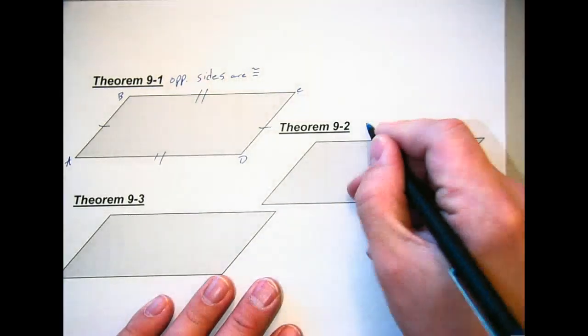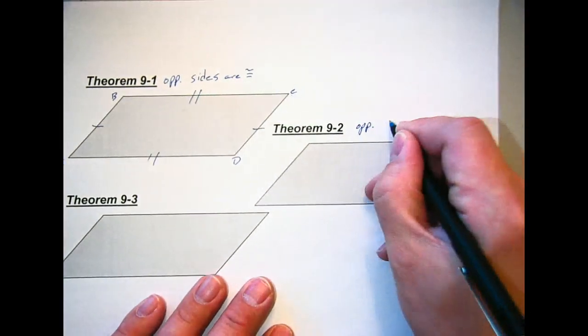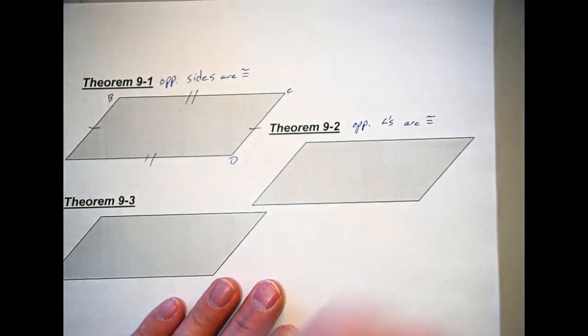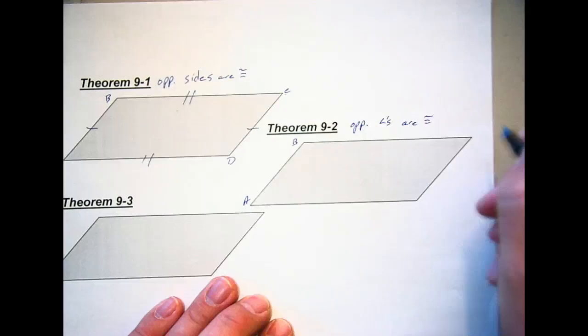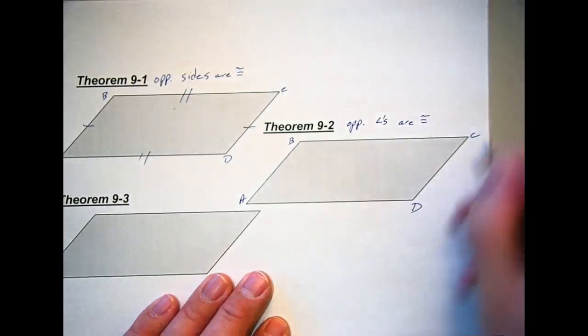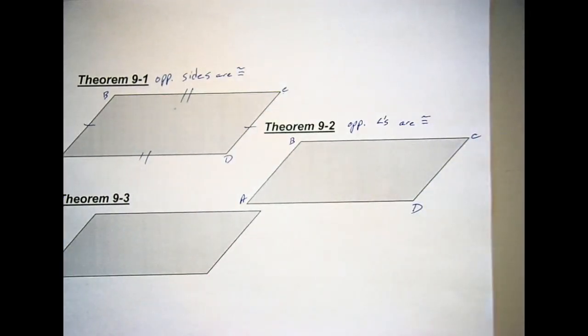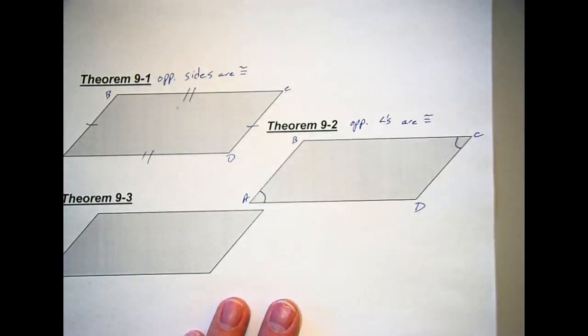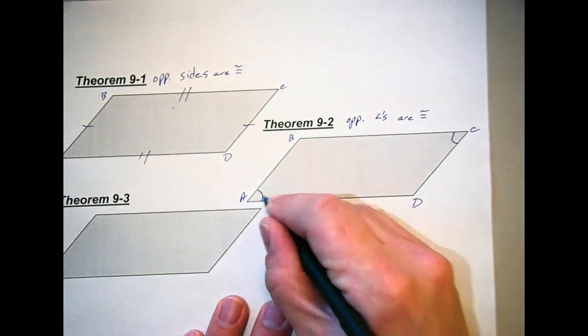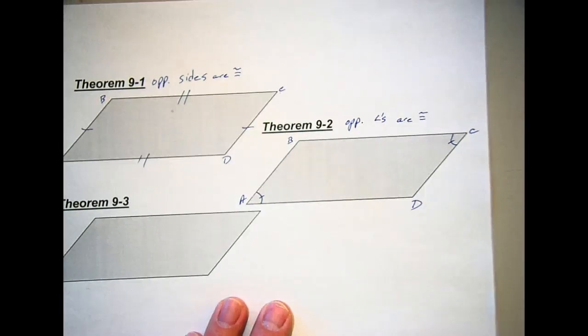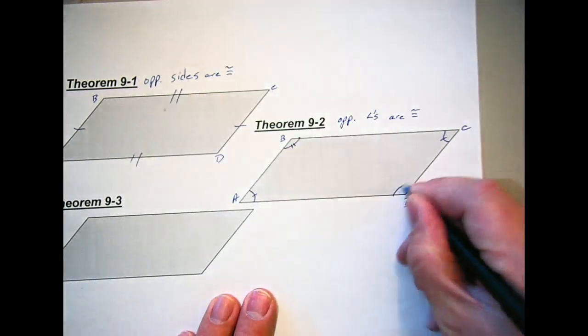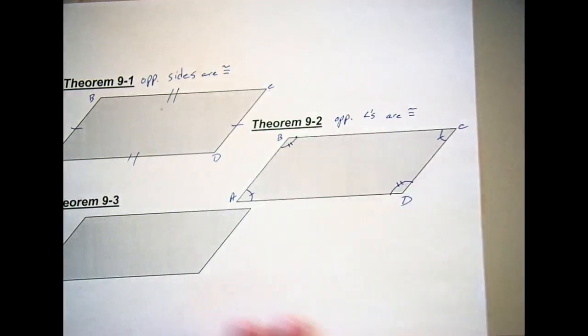Theorem 9-2 says opposite angles are congruent. Zach, you agree? Yeah. You sure? Would you bet your grade on it? You should never bet, Zach. But the answer is yes, Zach agrees. Angle A is congruent to C. You could have one marking in the angle. You have angle B congruent to angle D. Opposite angles of parallelograms are congruent. Opposite sides are congruent.